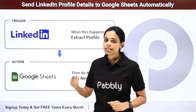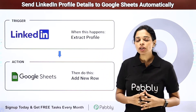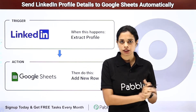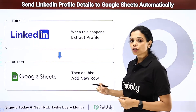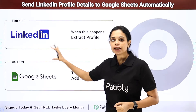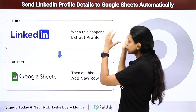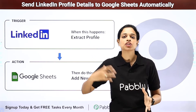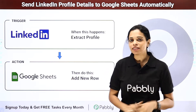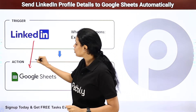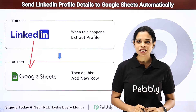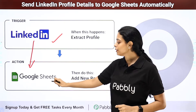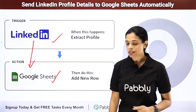The first one is — let's say that you are in charge of a company and you want to extract a lot of profiles for a particular position. You have checked out LinkedIn and extracted a few profiles. These profiles should now be part of your Google Sheets so you can check them out later. You will have to integrate these two applications using Pably Connect. Your trigger application would be LinkedIn and your action application would be Google Sheets.